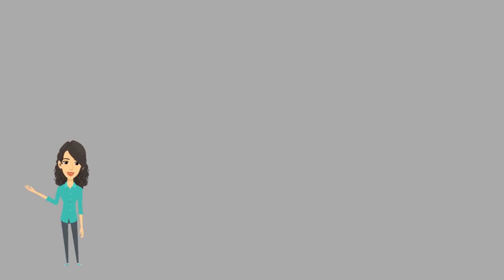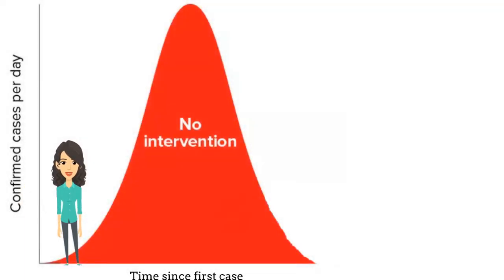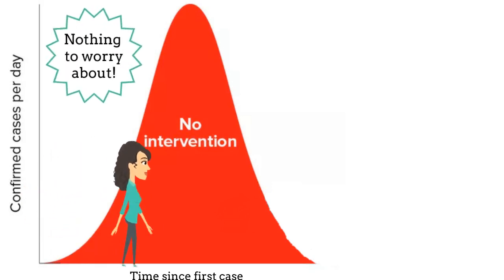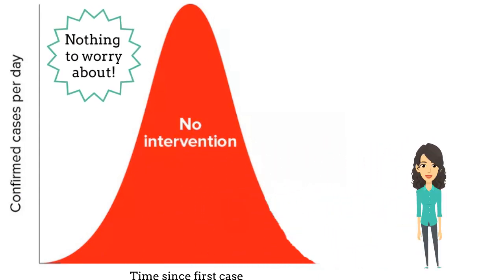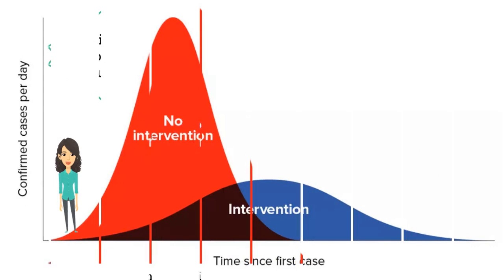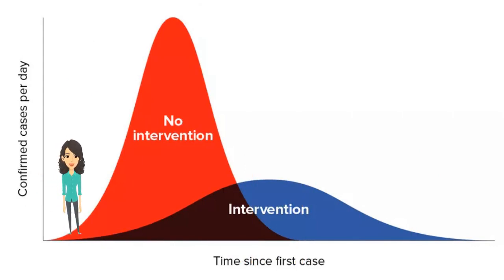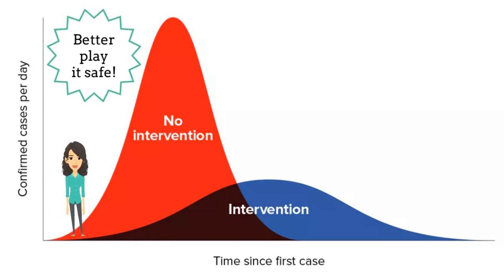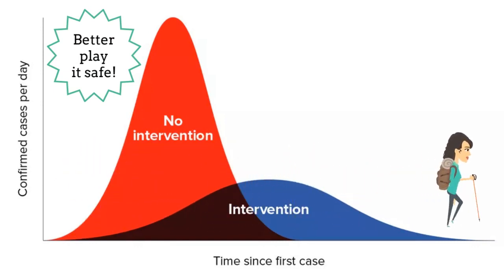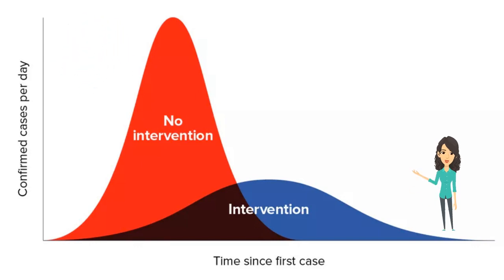Let's look at an example of how these mathematical models could be used to inform public health decision making. In this example, we're going to use a compartmental model, and we're going to start with what we'll call our baseline scenario. In this scenario, no public health measures are taken to prevent the spread of illness, and this model would suggest this is what we can expect to see in terms of the number of new cases over the coming months. In a second scenario, people are asked to take special precautions such as wearing a face mask, better hand hygiene, or physical distancing. The model would suggest that we'll see fewer cases under this scenario. This is one simple example of how a mathematical model could be used to inform decision making by identifying which public health measures are likely to have the greatest impact.